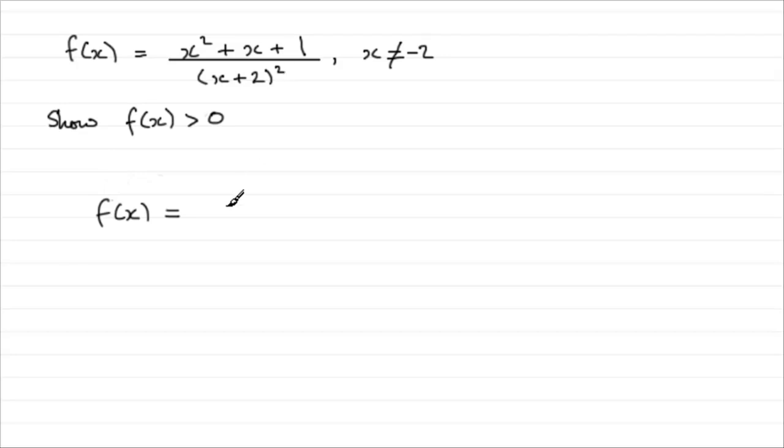So all we need to say is basically something along those lines. So f of x is greater than zero since x squared plus x plus 1 is greater than zero from the last part. Well, we can say the last part was part b.